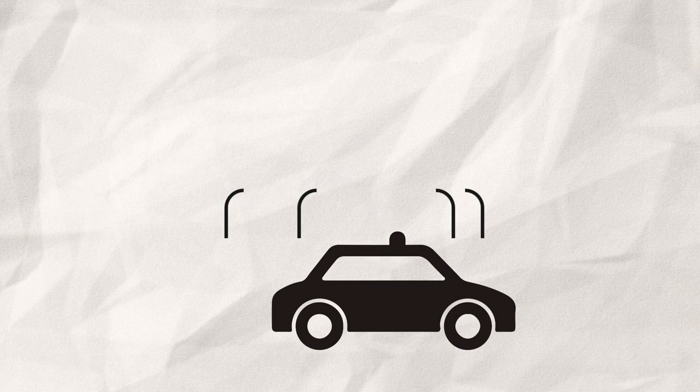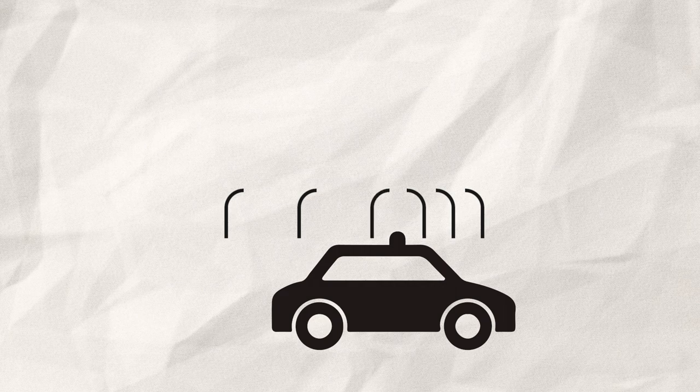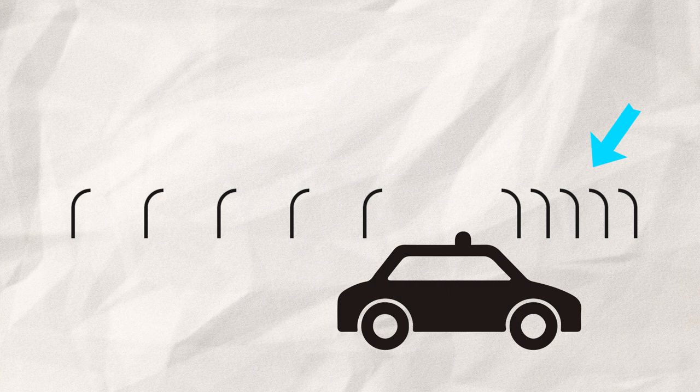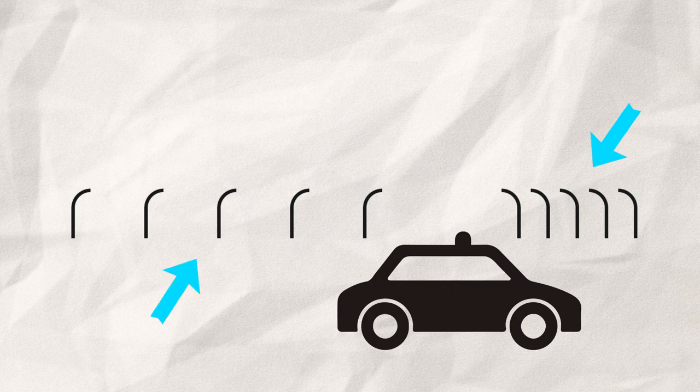But because the car, and therefore the source, has been moving as well, the second wave is much closer to one side than the other. If we do this several times in sequence, you can see that the wave gets bunched together on one side while being stretched out on the other.